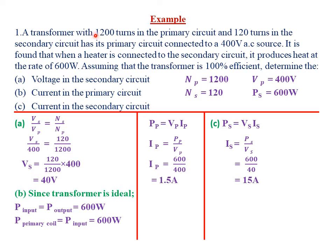First of all, we highlight the key information in the question. The number of turns in the primary circuit is 1,200 turns, and the number of turns in the secondary circuit is 120 turns. The voltage in the primary circuit is 400 volts. The power in the secondary circuit is 600 watts.